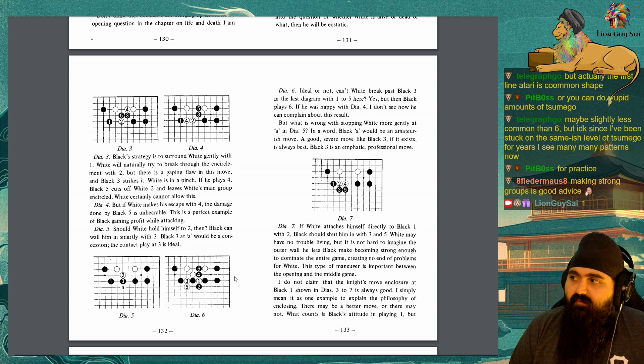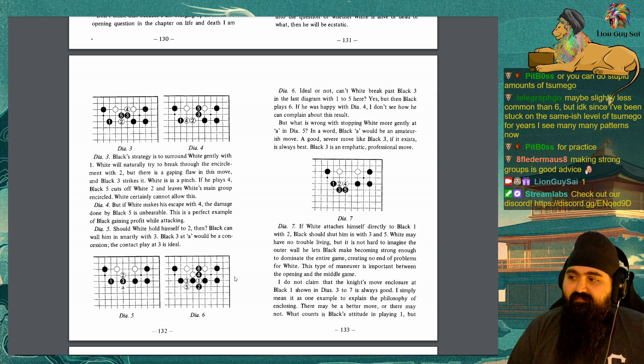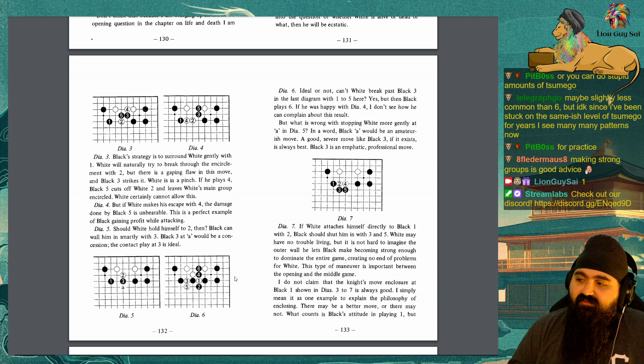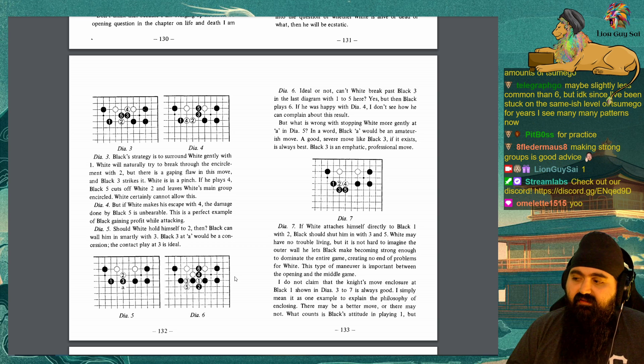Diagram 5: Should White hold himself to 2 then? Black can wall him in smartly with 3. Black 3 at A would be a concession. The contact play at 3 is ideal. Diagram 6: Ideal or not, can't White break past Black 3 in the last diagram with 1 to 5 here? Yes. But then Black plays 6. If he was happy with Diagram 4, I don't see how he can complain about this result. But what is wrong with stopping White more gently at A in Diagram 5? In a word, Black A would be an amateurish move. A good severe move like Black 3, if it exists, is always best. Black 3 is an emphatic professional move. Diagram 7: If White attaches himself directly to Black 1 with 2, Black should shut him in with 3 and 5. White may have no trouble living, but it is not hard to imagine the outer wall he lets Black make, becoming strong enough to dominate the entire game, creating no end of problems for White. This type of maneuver is important between the opening and the middle game.